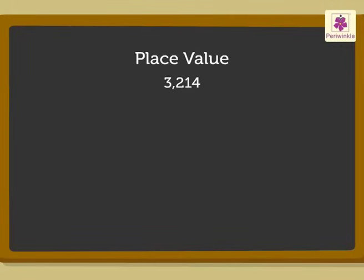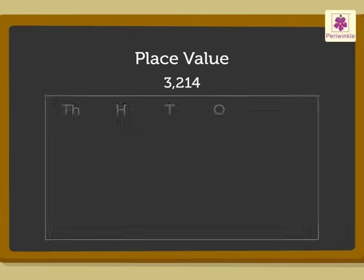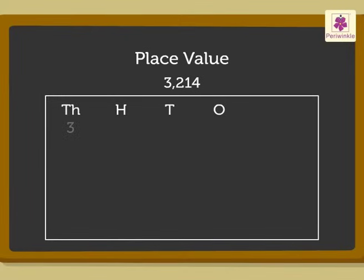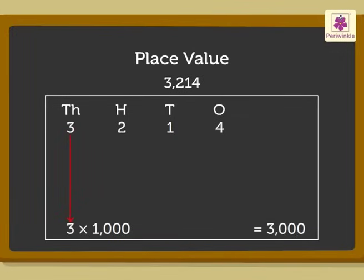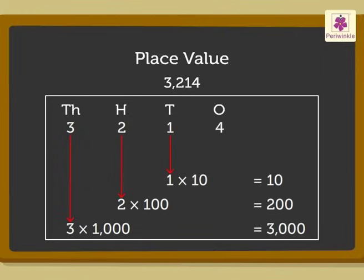Now, let us try to solve one more example: number 3214. Let us place each digit in its respective place. So, 3 goes in the thousands column, 2 goes in the hundreds column, 1 in the tens column, 4 in the ones column. The place value of 3 is 3000, the place value of 2 is 200, the place value of 1 is 10, the place value of 4 is 4.